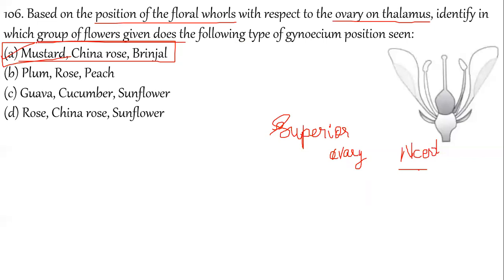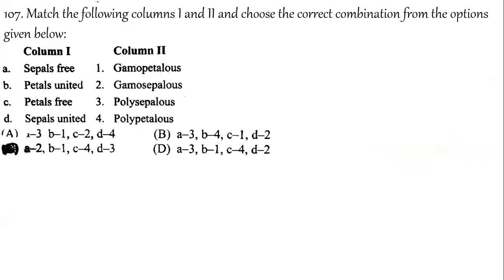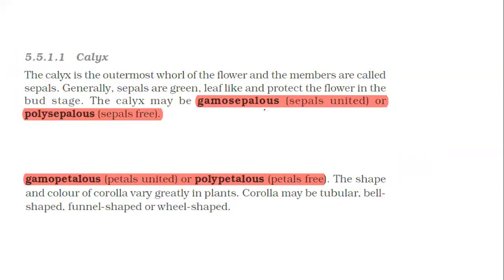Question 107: Match the following columns. If sepals are free, they are polysepalous. If petals are united, the condition is gamopetalous. If petals are free, they are polypetalous. If sepals are united, they are gamosepalous. The correct answer is option B: gamosepalous = sepals united; polysepalous = sepals free; gamopetalous = petals united; polypetalous = petals free — as per NCERT.